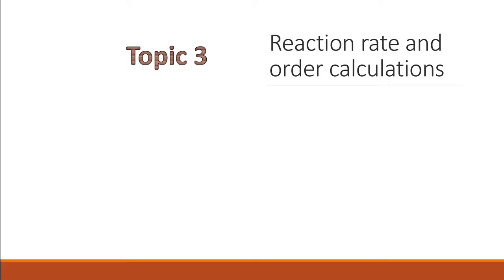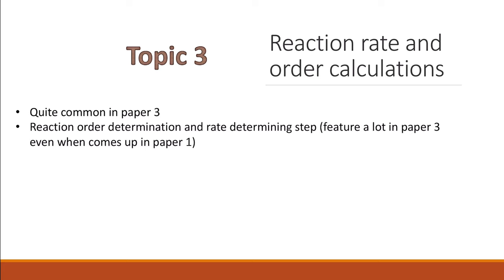Topic 3 is reaction rate and order calculations. This is also one of the quite common questions or topics in Paper 3 even if they come up in Paper 1. However, when this question comes in Paper 3, it would be about the things that haven't been covered in Paper 1. Reaction order determination and the rate determining step features a lot in Paper 3 even when it comes up in Paper 1.